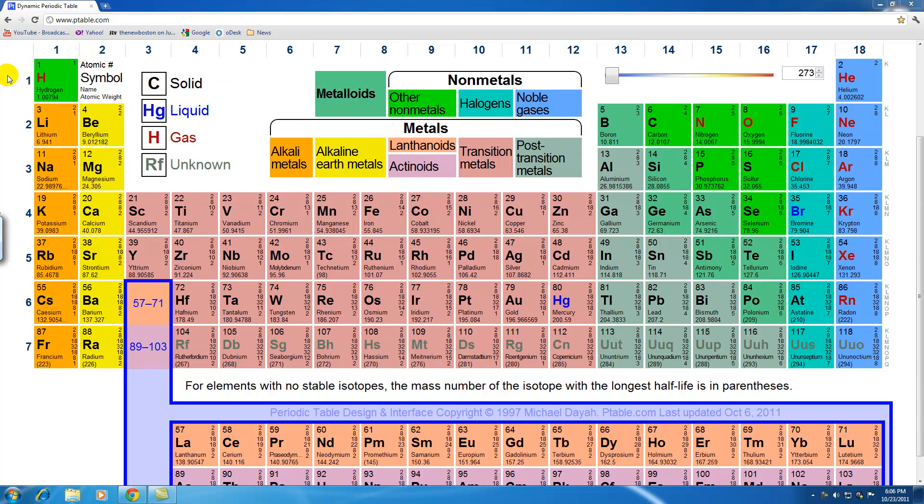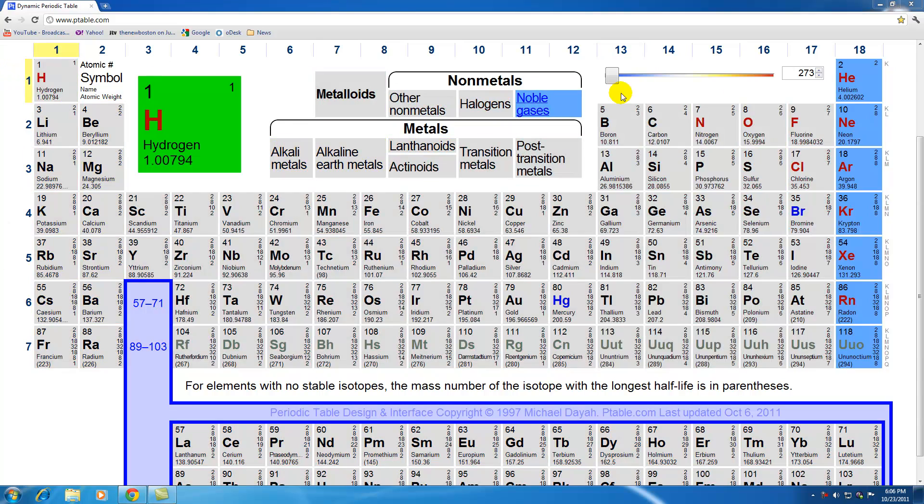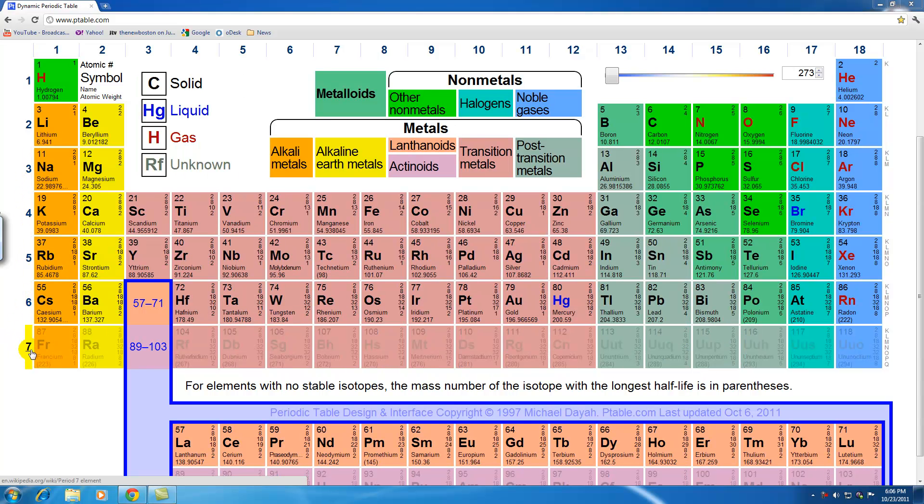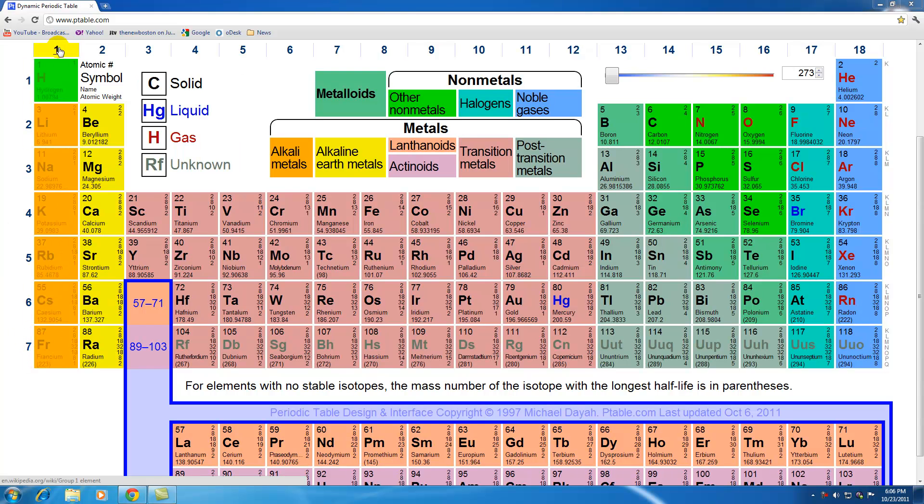First of all, the horizontal rows are called periods. Now if you look we have seven periods: one, two, three, four, five, six, seven. Again, the rows are called periods.